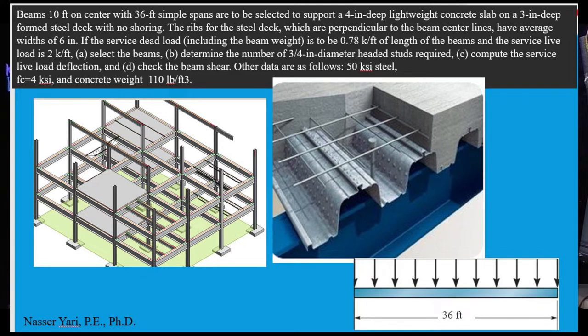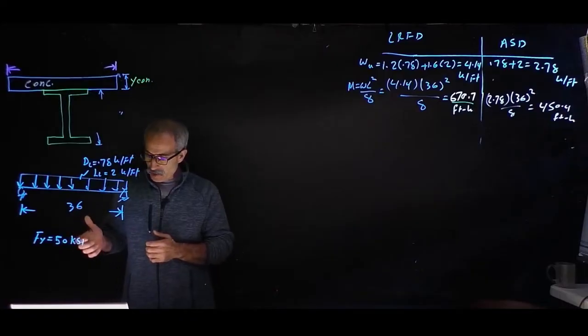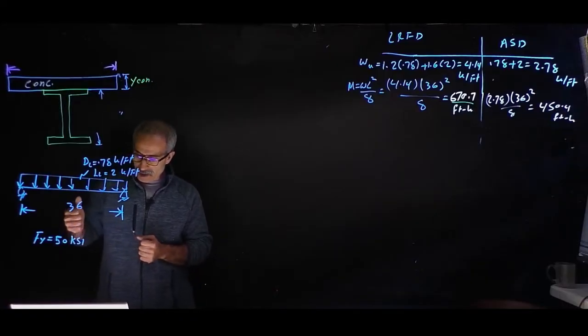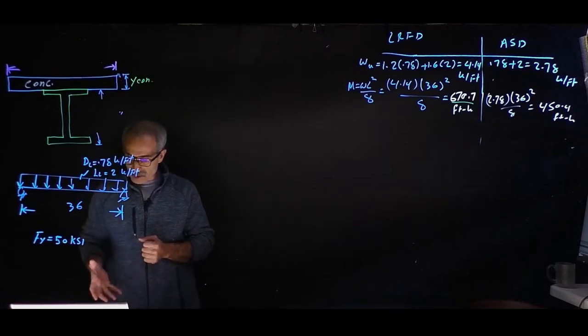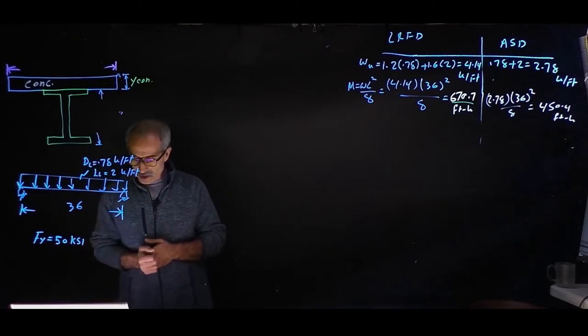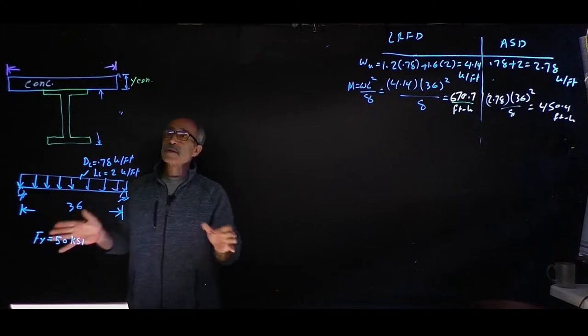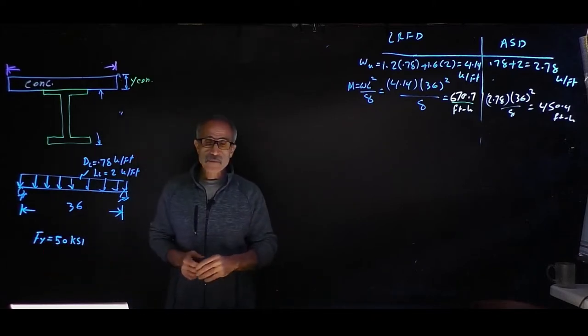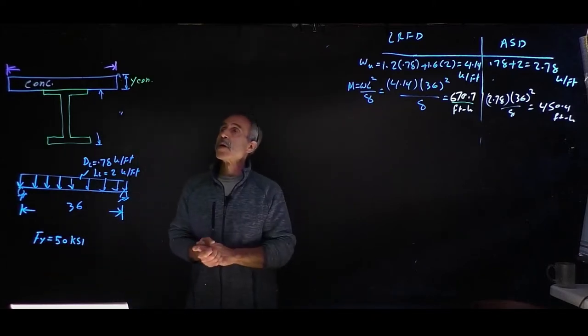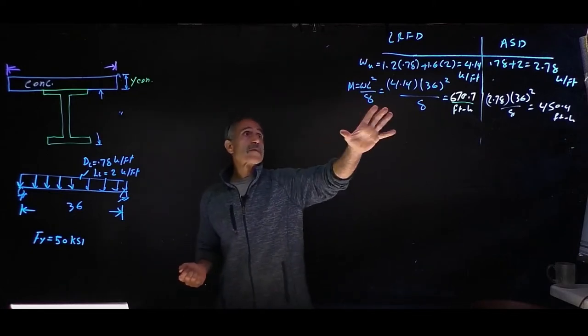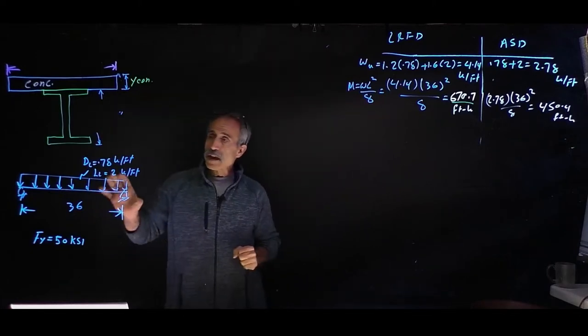The beams are 10 feet on center and the span length is simply supported 36 feet. It will support 4 inch deep lightweight concrete and 3 inch deep form steel deck with no shoring. The dead load is 0.78 kip per foot and the live load is 2 kip per foot. First we're going to select the beam, find the number of 3 quarter inch diameter studs, then compute the deflection for wet concrete and live load deflection, and check for shear.